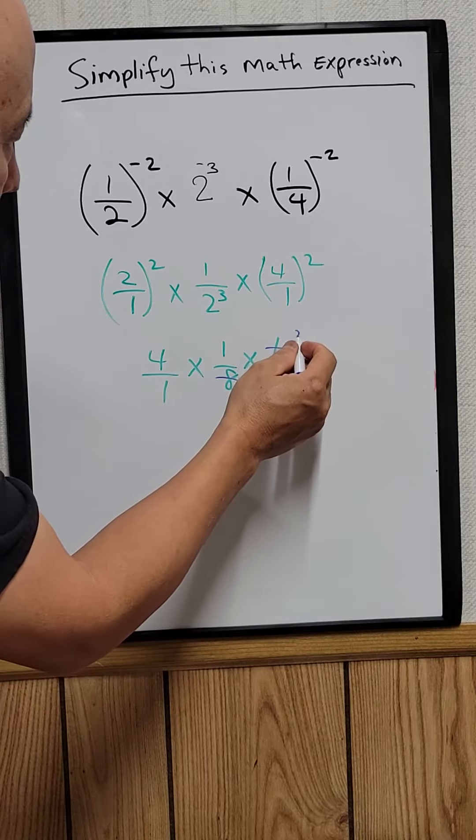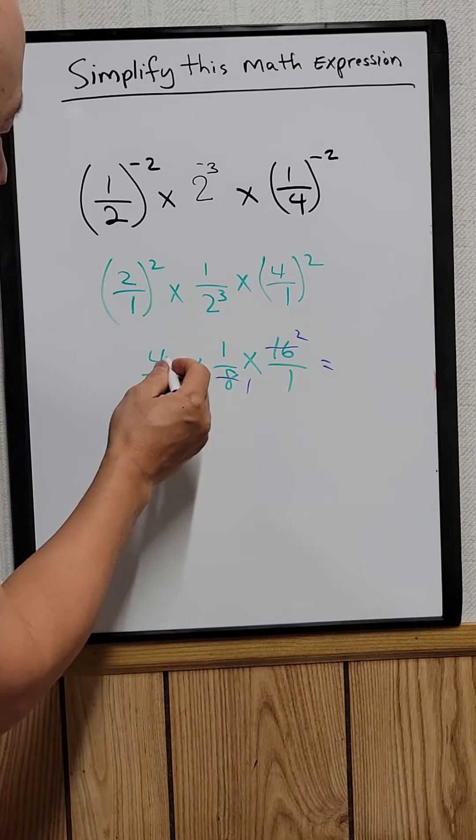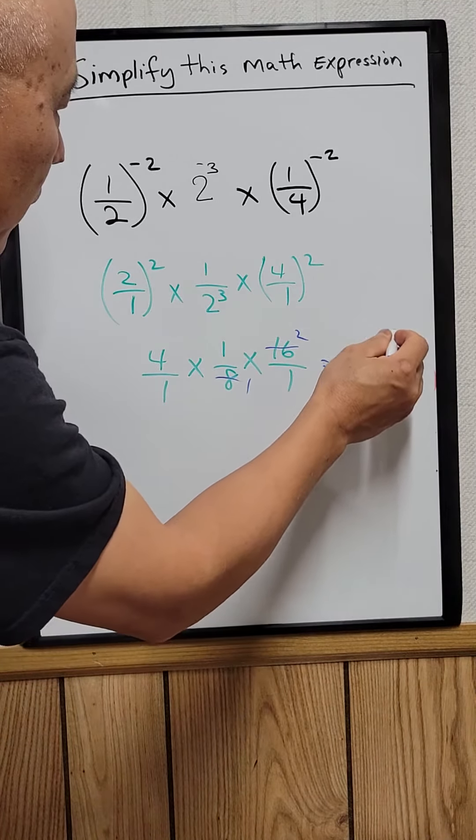Two times four is eight, so the answer is eight.